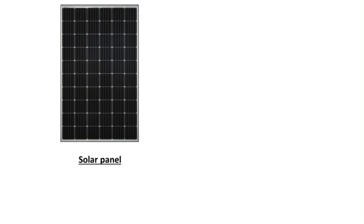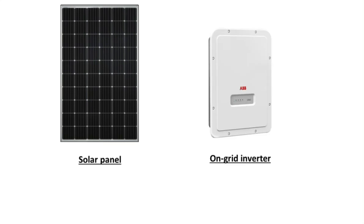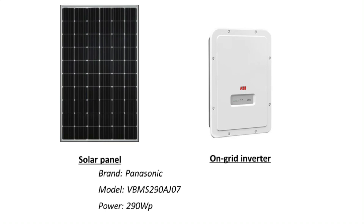A solar system will contain 2 important parts. The first one is the solar panel. The second one is the on-grid inverter. You can choose any brand — it will depend on your budget. In this video, the solar panel is from Panasonic brand with a peak power of 290 W. And the inverter is from ABB brand with a power of 3.3 kW.